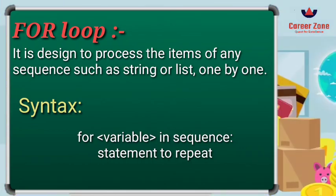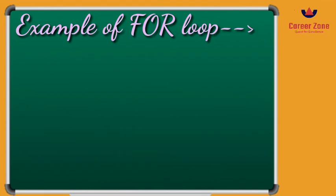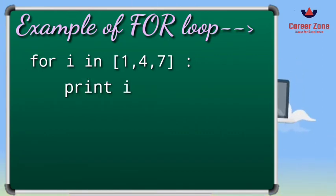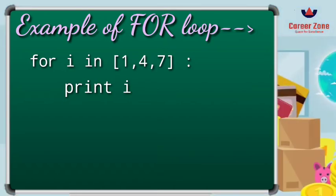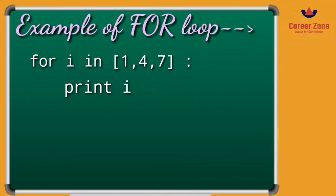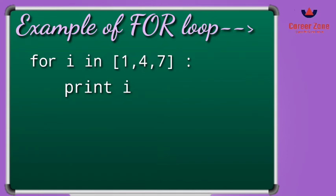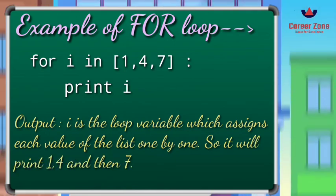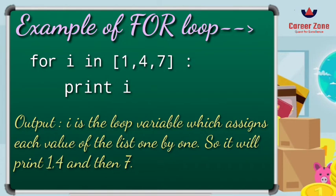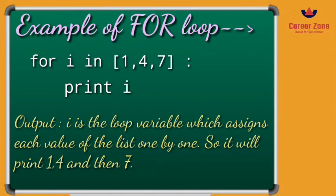Let's see an example of a for loop. I have written: for i in [1, 4, 7]: print(i). Here i is the variable name and in is the membership operator. When you execute this program, it will give you the output as 1, 4, and 7. The looping variable i reads the values from the list one by one — the first time the value will be 1, the second time 4, and the third time 7 — so they are printed continuously.